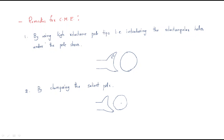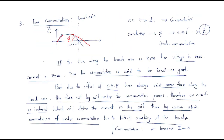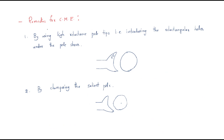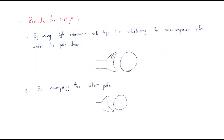In the last session we discussed the effects of the cross-magnetizing effect. Now we will discuss the remedies of the cross-magnetizing effect — that means how we can decrease this effect, because cross-magnetizing gives adverse effects on the DC machine due to armature reaction. We need to recover from all these adverse effects.